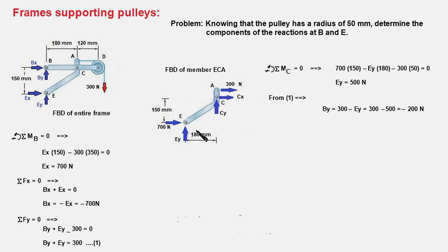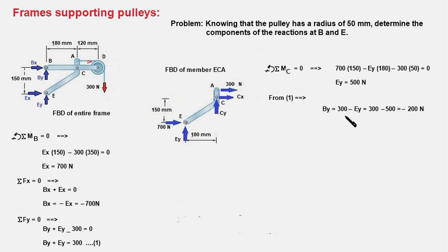The FBD of member ECA looks like this. The two reaction components are shown at point E, and the two reaction components at C are due to the interaction of the other member BD acting on member ECA. A tension force acts at point A in the rightward direction. Taking the moment of all forces about point C eliminates those two forces, leaving only one unknown EY. From this moment equation about point C, EY turns out to be 500 newtons. Plugging this into the earlier equation gives BY as minus 200 newtons.